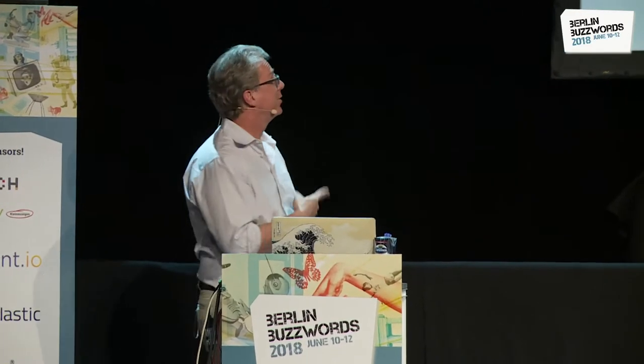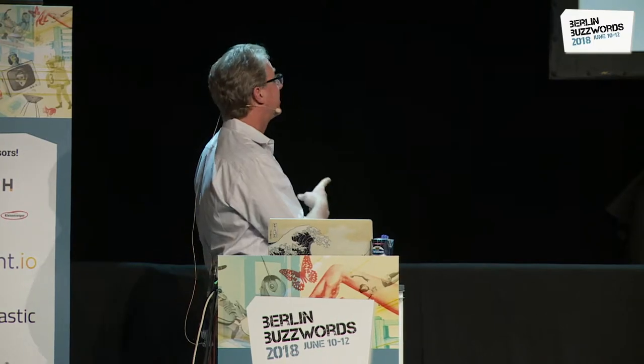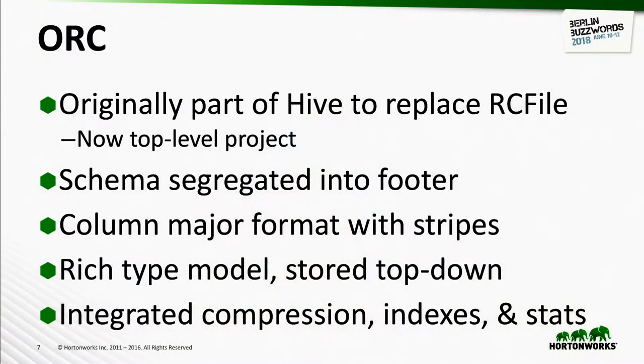ORC was originally started as part of Hive to replace RC file, and now it's a top-level project. The schema is segregated into the footer, so you have just one copy. It's a column-major format so you can read individual columns without reading others. It has a rich type model stored top-down, with integrated compression, indexing, and stats. RC file treated each column as a blob, which meant you couldn't do anything higher level without outside information — that turned out to be a serious mistake.